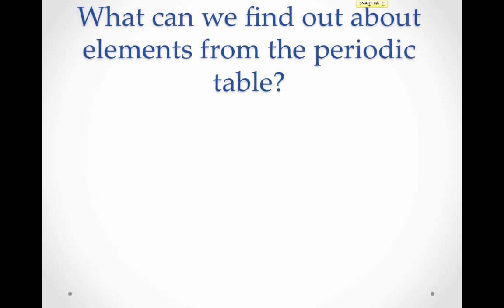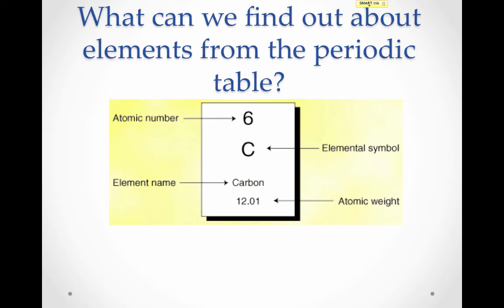So where can we find all this information on the periodic table? Here's an example of a typical box from the periodic table. The whole number generally located in the center at the top is the atomic number — the number of protons and the number of electrons in a neutral atom. The name of the element is also generally written, as well as its symbol. Element symbols are made up of always one capital letter, and if they include a second letter, that letter is lowercase. We also have the atomic weight or atomic mass, which is the weighted average of all of the isotopes of the element, generally written at the bottom. You'll be able to tell it from the atomic number because it's usually not a whole number.